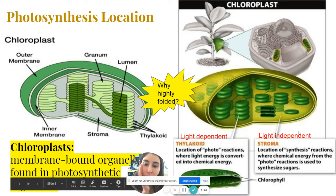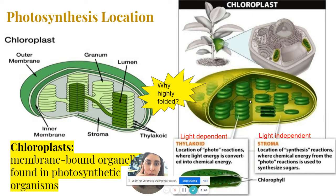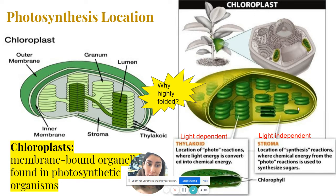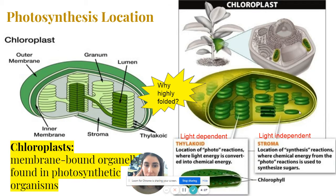Looking at the different parts of the chloroplast in more detail: we have this disc-shaped structure, and there's a fluid or jelly-like substance that fills the chloroplast. Just as cytoplasm fills a cell, this fluid-like material that fills the chloroplast — shown here in a light green or yellow color — is known as the stroma, and the stroma is where the light-independent reactions are going to take place. On the other hand, we have these green disc-shaped structures known as the thylakoids, and this is where the light-dependent reactions are going to take place.